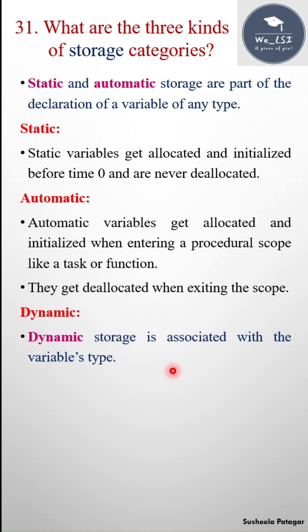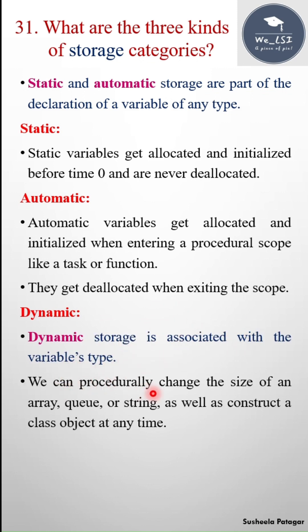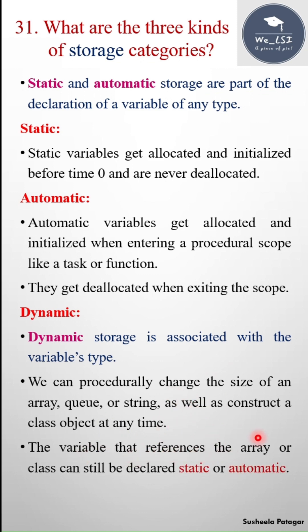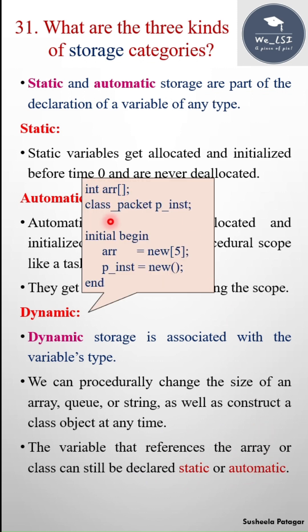The next one is dynamic. Dynamic storage is associated with the variable's type. We can procedurally change the size of an array, queue, or string, as well as construct a class object at any time. The variable that references the array or class can still be declared as static or automatic. For example, int array and class packet pinst — this is the dynamic array and this is the class. Class packet is the class name and pinst is the instance of class packet. Here I'm creating the memory for the dynamic array with a size of 5, and here I'm creating the object for pinst.